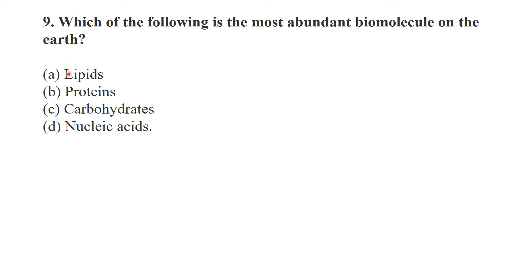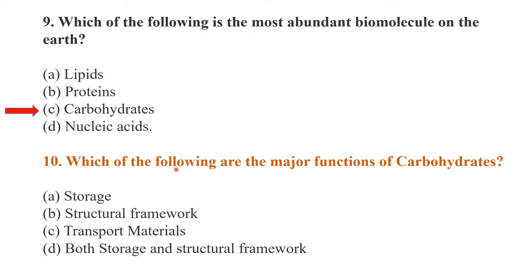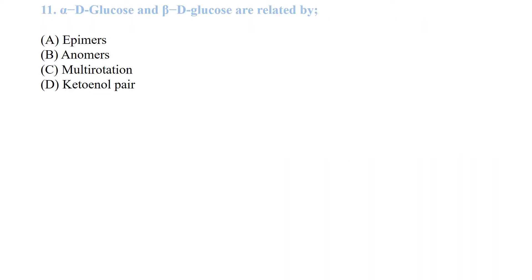Which of the following is the most abundant biomolecule on Earth — lipids, proteins, carbohydrates, or nucleic acids? The most abundant biomolecule is carbohydrates. The major functions of carbohydrates include storage and structural roles — both storage and structure are functions of carbohydrates.